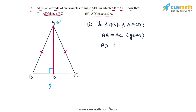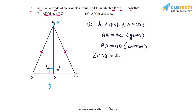So we can write AD equals AD, common. Also, because AD is the altitude, angle ADB is 90 degrees and angle ADC is also 90 degrees. So angle ADB equals angle ADC, because both are equal to 90 degrees. This fact is also given to us in the form of saying AD is the altitude.